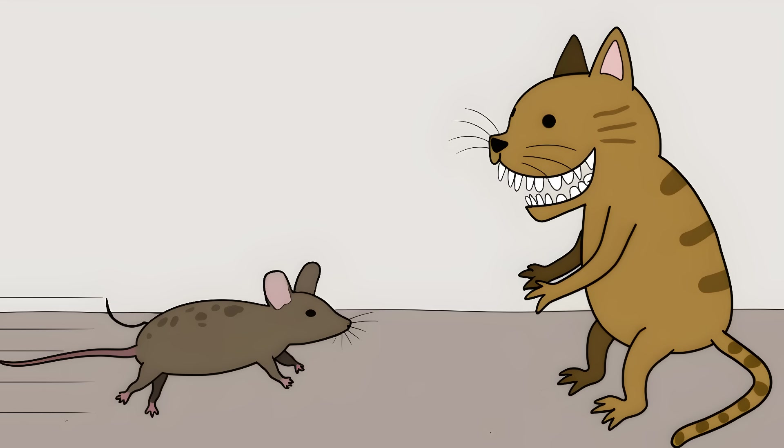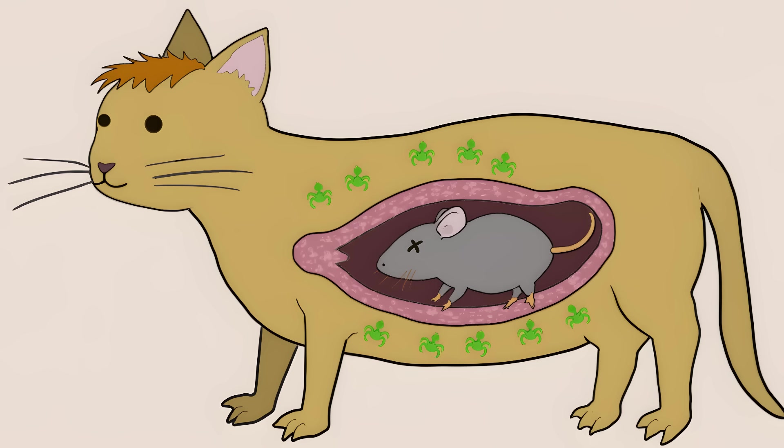The infected mouse walks right up to cats, serving itself up for dinner. When the cat eats the mouse, the parasite can reproduce inside the cat's gut and spread through its poop to infect more mice.